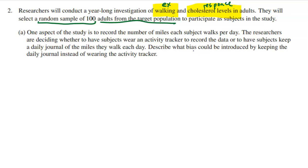They are asking people to track their miles walked. Some might argue that makes it an experiment because you're making them do something, but what makes an experiment is having a comparison — you 50 people get this treatment, you other 50 get a different one. That's not what's happening here. This question just wants us to focus on what type of bias there would be if people keep a daily journal instead of wearing an activity tracker.